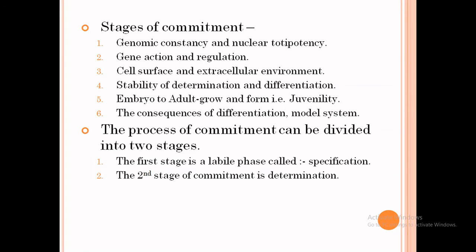The sixth stage is the consequence of differentiation or model system — as a result of commitment, the cell proceeds from a certain phase and commits; no change occurs in this model system. The processes of commitment can be divided into two stages: the first stage is the labile phase, called specification, and the second stage of commitment is determination.